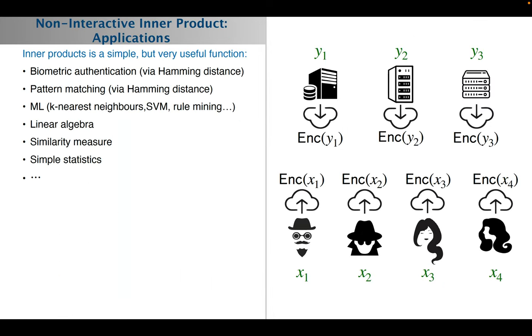Non-interactive inner products have many natural applications. It includes, among other things, biometric authentication via Hamming distance, pattern matching, machine learning in k-nearest neighbors and support vector machines, linear algebra, similarity measure, simple statistics, and many more.